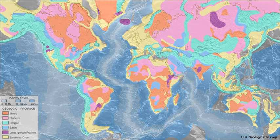An orogeny is an event that leads to both structural deformation and compositional differentiation of the Earth's lithosphere at convergent plate margins. An orogen or orogenic belt develops when a continental plate crumples and is pushed upwards to form one or more mountain ranges. This involves a series of geological processes collectively called orogenesis. Orogeny is the primary mechanism by which mountains are built on continents.